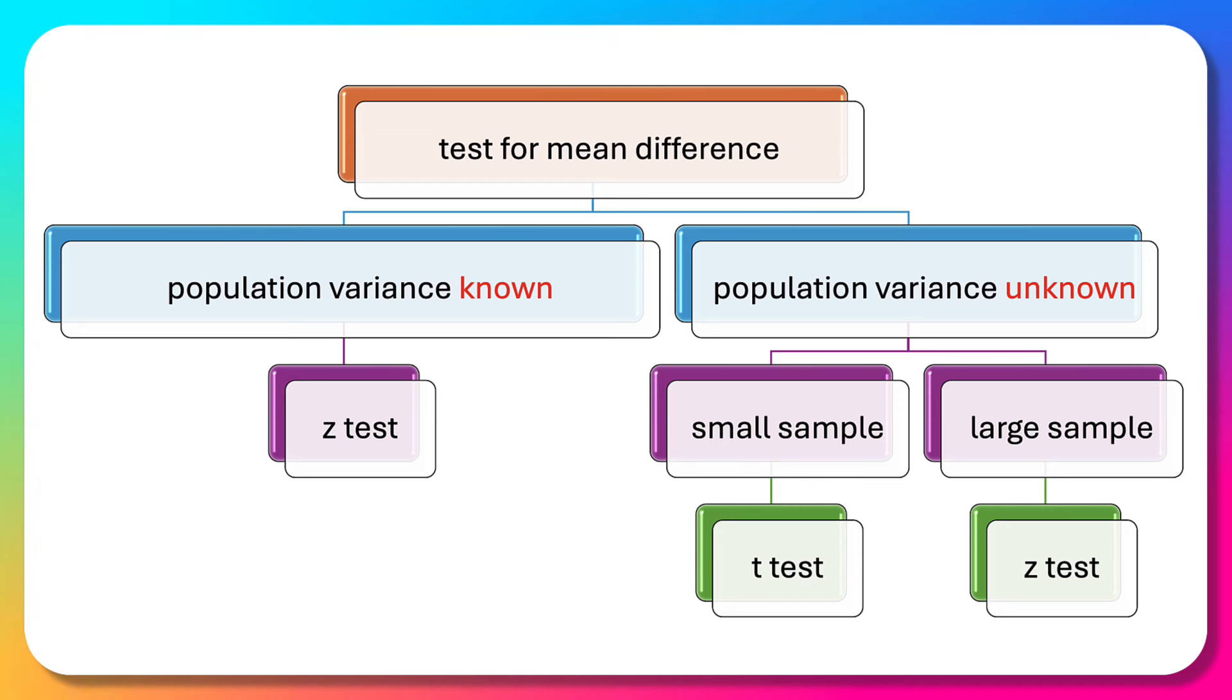For testing mean difference, there are basically two cases: when the population variance is known, and when it is unknown. When unknown, we consider small sample and large sample cases.